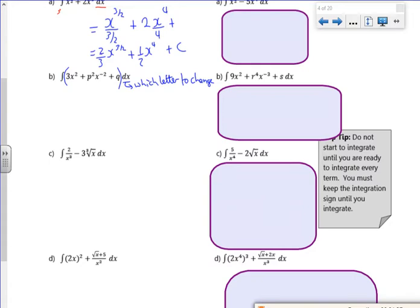So I'm changing the x. So my 3x squared becomes 3x cubed over 3. Add 1 to the power, divide by the new power. So that just gives me x cubed.